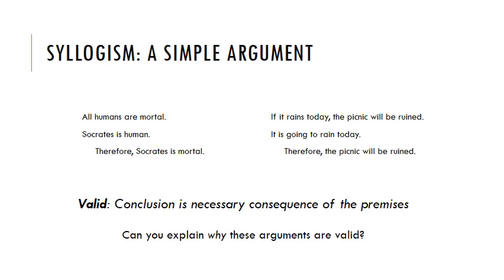There's no getting a different conclusion or a conclusion that's the opposite of what we've reached here. These are pretty simple and it should be almost obvious — perhaps even too obvious — but take a second to think about why these arguments are valid. Why is it that we can say the conclusion definitely, necessarily follows from the premises?